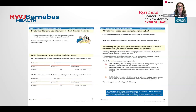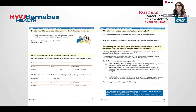On page five you write in who your medical decision maker or makers are — it's good to have two people, with one as a backup. At the top it allows you to write if there are any decisions you do not want them to make. On page six you can explain why you chose these people — for example, if you're married but choosing your sibling. It also asks whether you want your medical decision maker to have flexibility or to follow everything in this document exactly as you wrote it, or if you trust them to use good judgment.